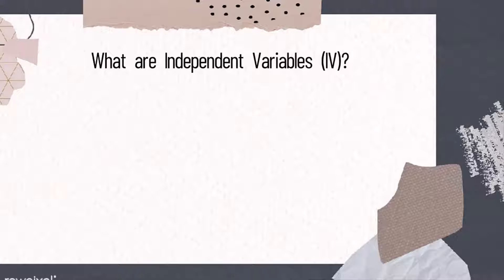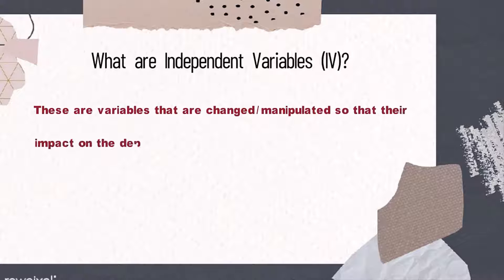First, we need to understand what are dependent and independent variables. Independent variables are variables that are changed or manipulated so that their impact on the dependent variables can be monitored.